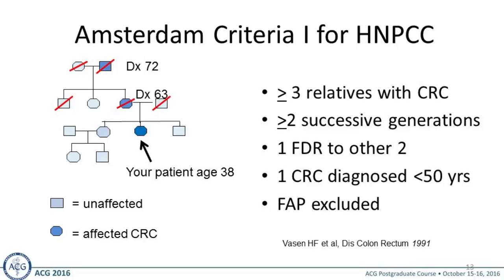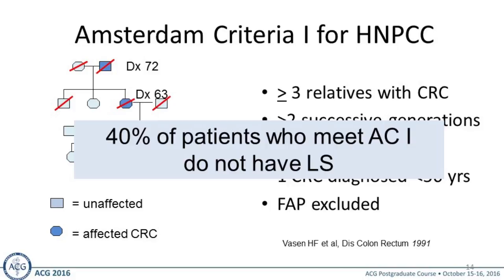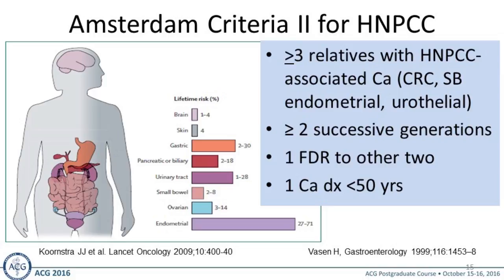The Amsterdam Criteria 1 for HNPCC is 3-2-1: three or more relatives with colorectal cancer, two or more successive generations affected, and one first-degree relative linking the other two. The colorectal cancers need to be diagnosed under age 50, and you want to exclude other hereditary syndromes like FAP. Unfortunately, 40% of patients who meet this phenotype don't have Lynch syndrome. The Amsterdam Criteria 2 was then developed to account for extra-colonic cancers seen in Lynch syndrome patients.